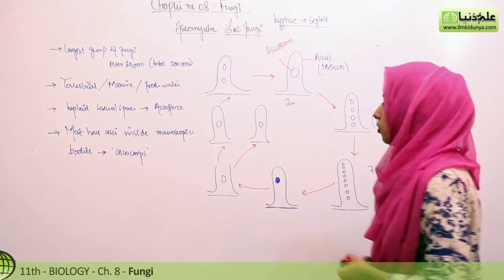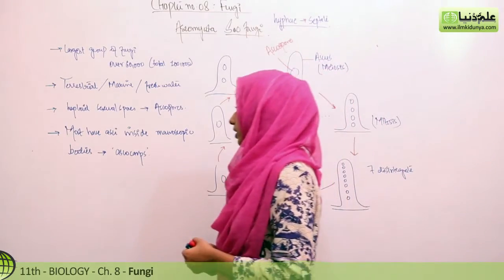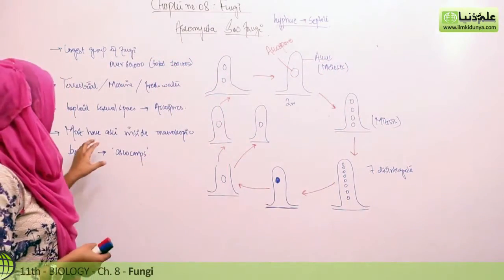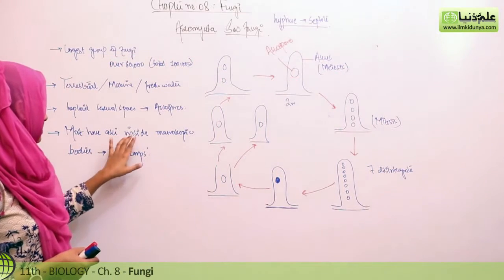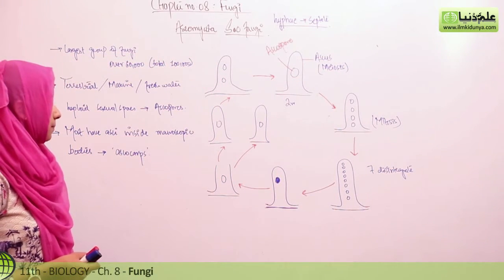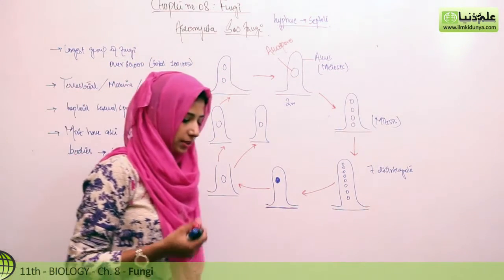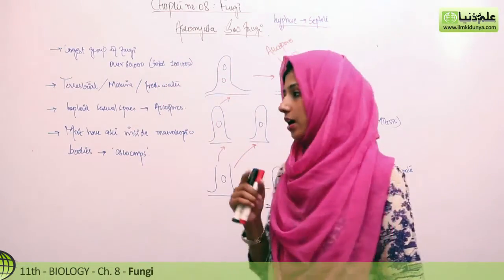There are haploid sexual spores called ascospores, which are inside macroscopic bodies called ascocarps. Ascocarps are the macroscopic bodies where the spores are available.